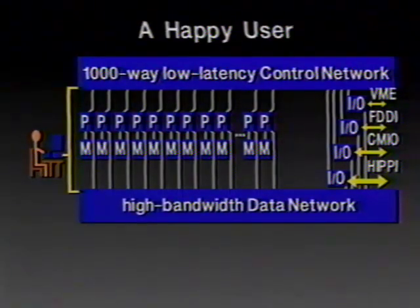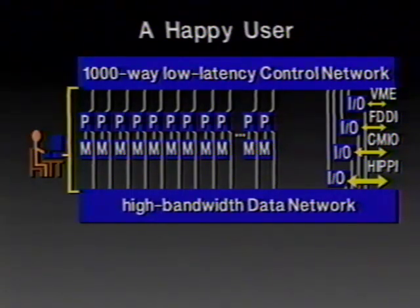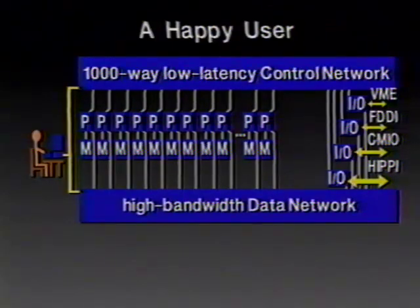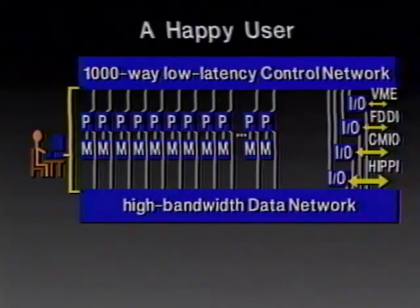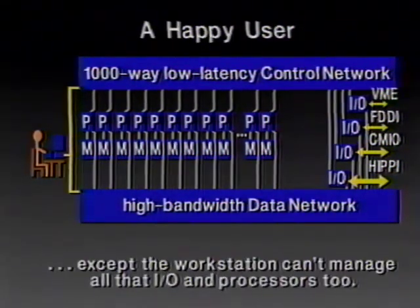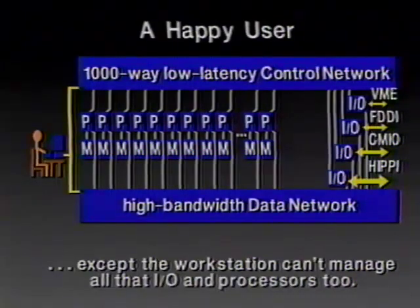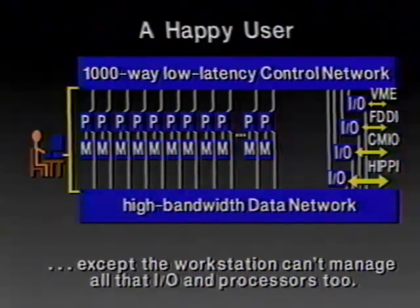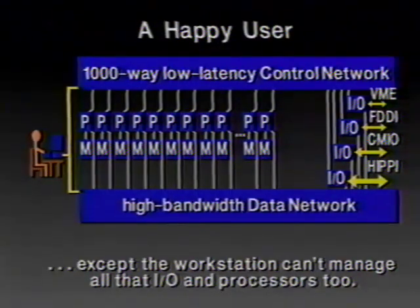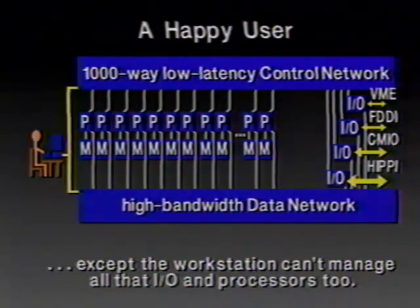So we've got lots of I/O connections here, and you can connect up to all kinds of things — VME, CMIO, HIPPI, FDDI, and all that stuff. Now the user can hook up lots of I/O devices to the computing system. But now the poor workstation is overburdened just trying to manage this huge system. It can't manage all of these processors and all the I/O going on. It has become the bottleneck again because of its processing power rather than its I/O capacity. Every time you add something on, something goes slightly out of whack.